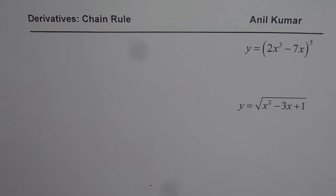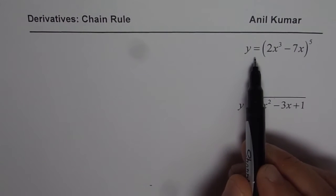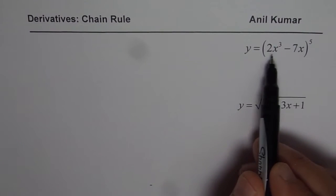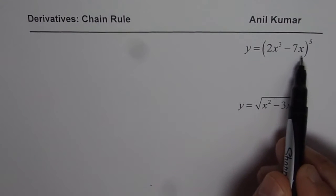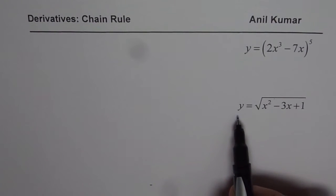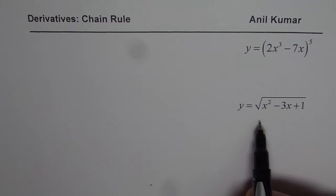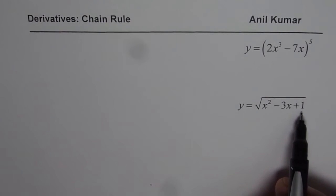I have taken up two examples here. The first one is y equals to (2x³ - 7x)⁵ and the other one is square root of x² - 3x + 1.